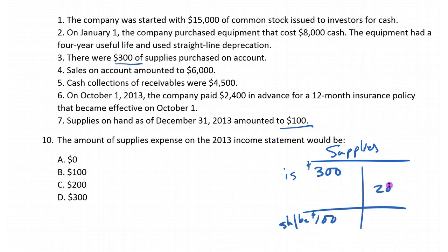We're going to credit the account $200. So we would debit supplies expense for $200 and credit supplies. That's the adjusting entry we would make.